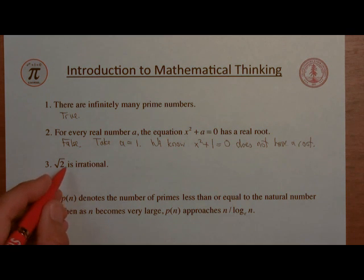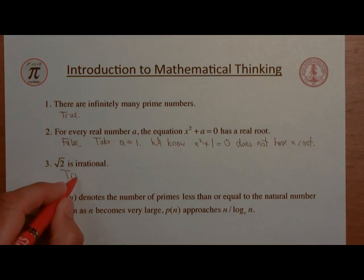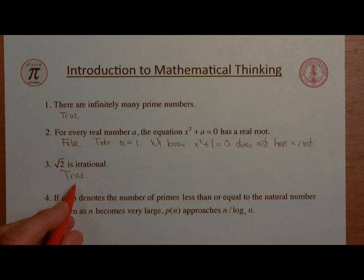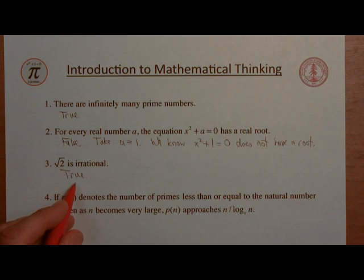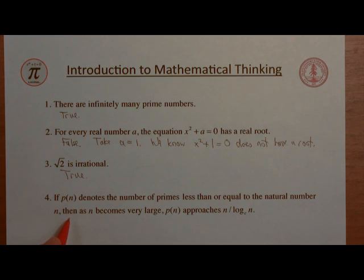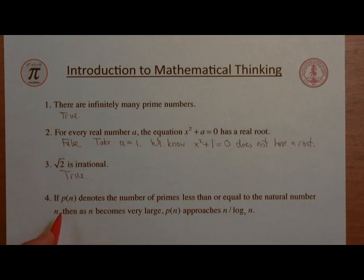What about number 3? Well, that one turns out to be true, and we're going to prove that's true later in the course. The fourth one, this rather complicated looking statement about the distribution of the prime numbers, that's a very famous result that was proved just over 100 years ago, at the end of the 19th century. It's known as the prime number theorem. So this one is true, the prime number theorem. And there we are.